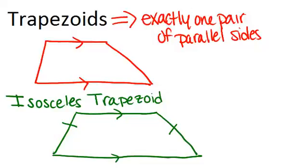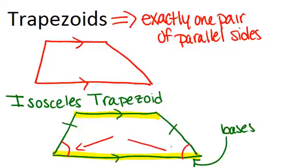In an isosceles trapezoid, the two parallel sides are called the bases. The angles at the bottom along the longer base are called the base angles. The congruent sides are called the legs.